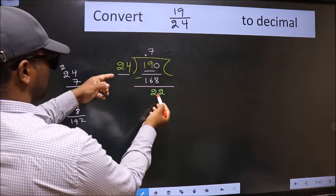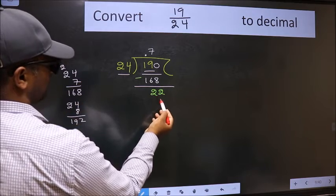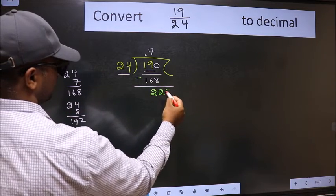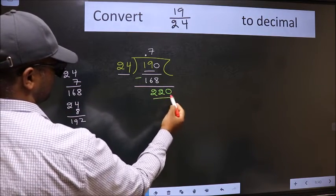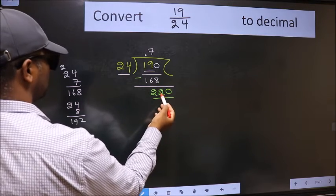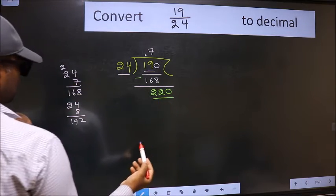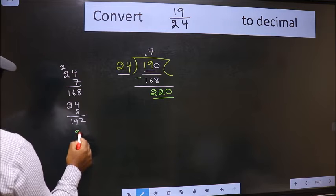22 is smaller than 24 and we already have the decimal, so directly take 0. So 220. A number close to 220 in the 24 table is... let us take 9.